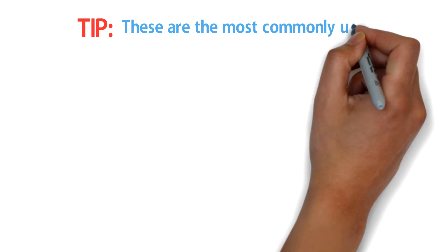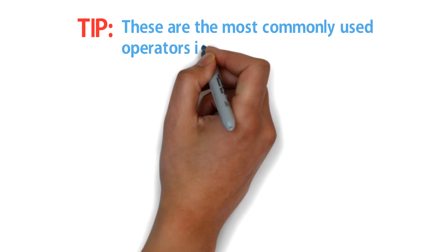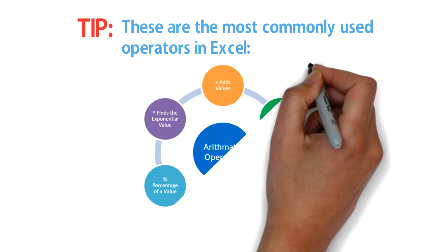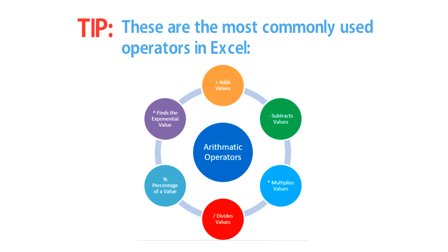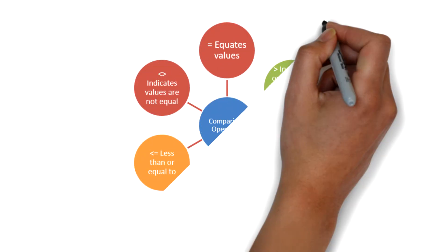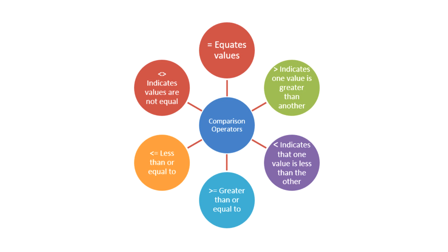These are the most commonly used operators in Excel: plus adds values; minus subtracts values; star multiplies values; slash divides values; percent gives the percentage of a value; and caret finds the exponential value. Equal equates values.